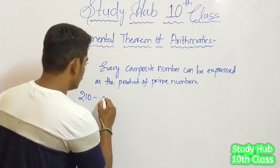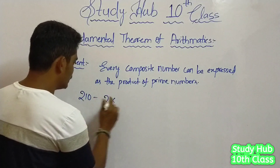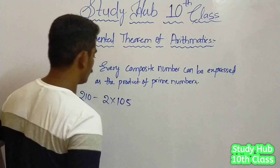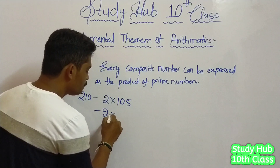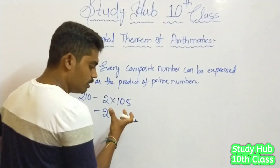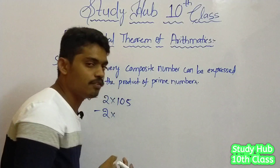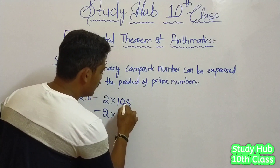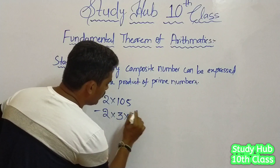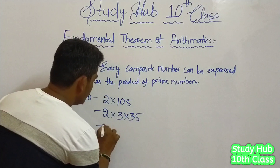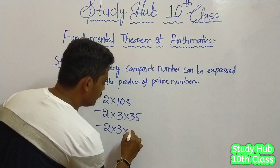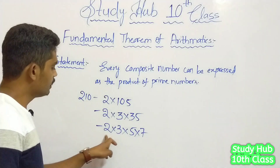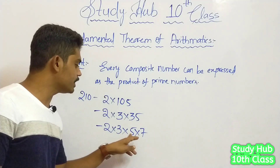210 — we can write it as 2 into 105. 2 into 3 is 6, and then we get 35. We can write 35 as 5 into 7. So 210 has been reduced to simplest terms: 2 into 3 into 5 into 7.